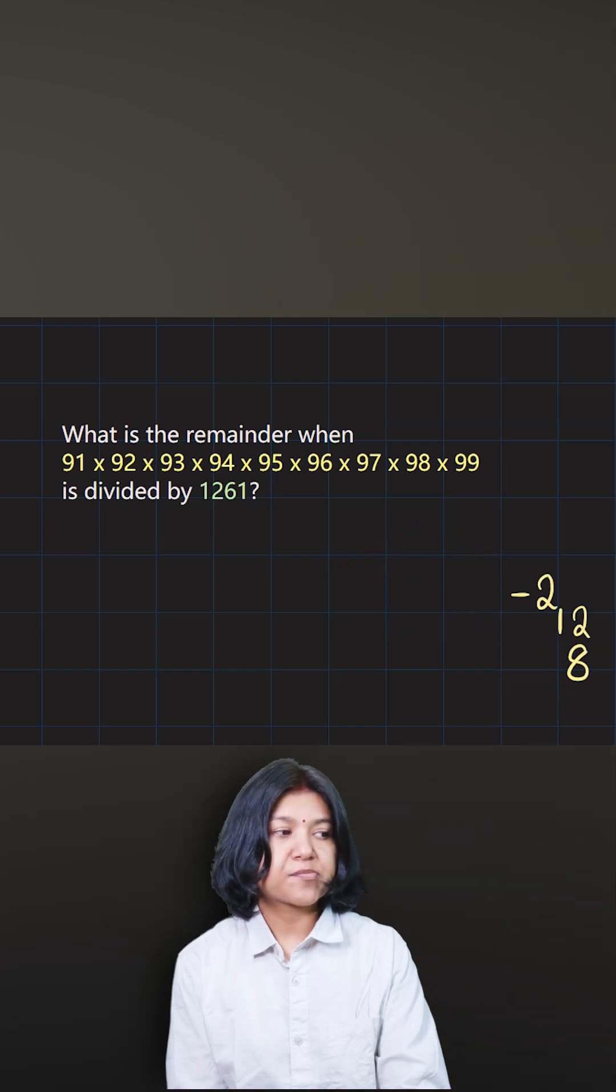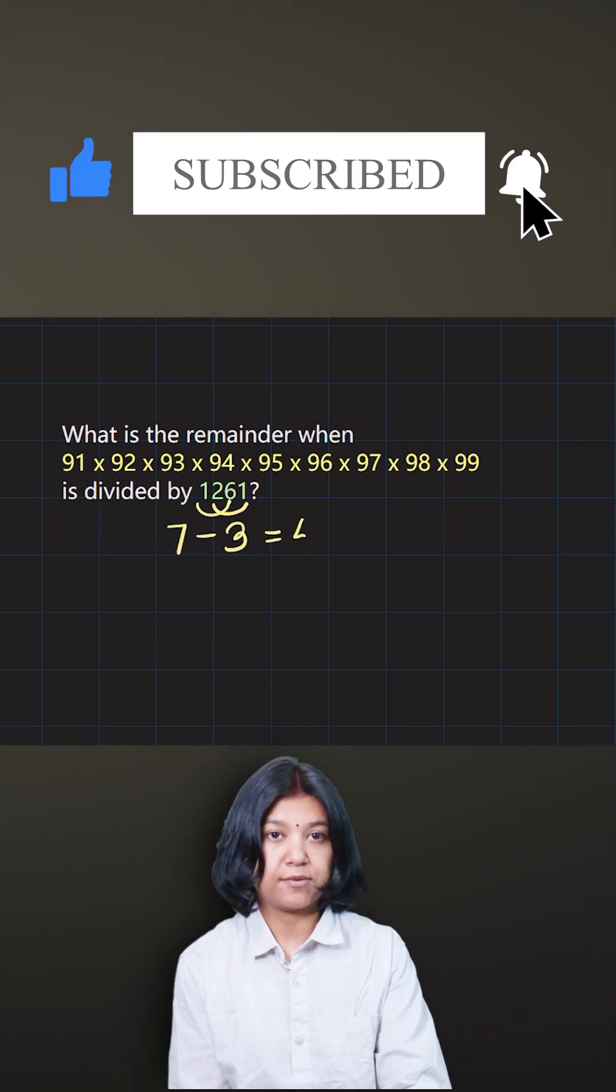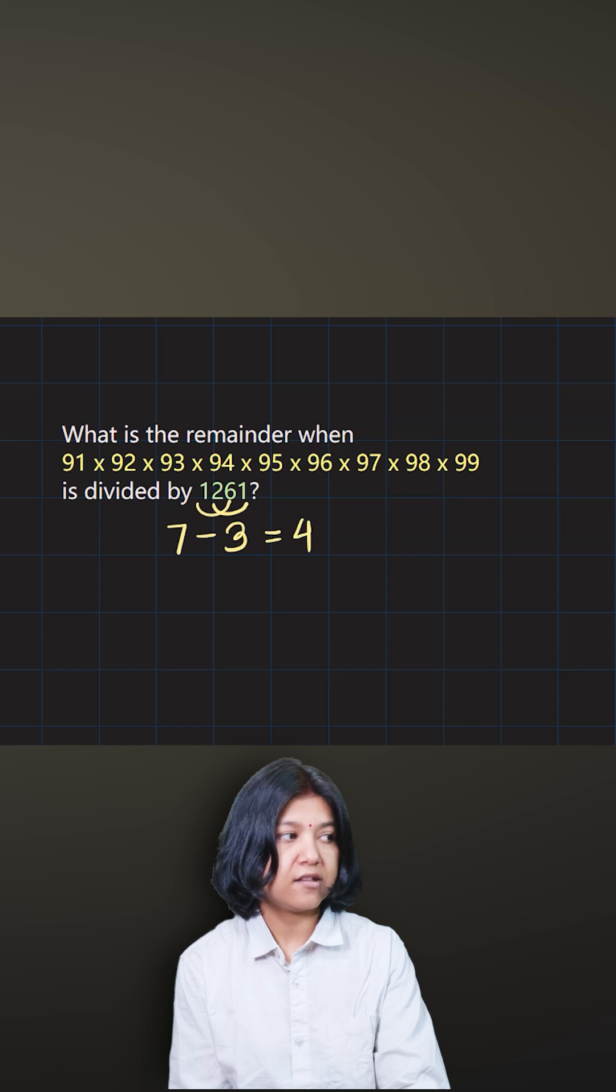Now we try with the next prime number which is 11. To check for 11 you just take the digits at the alternate place. 2 plus 1 is 3. 6 plus 1 is 7. Their difference is again not a multiple of 11. So 11 does not divide this.